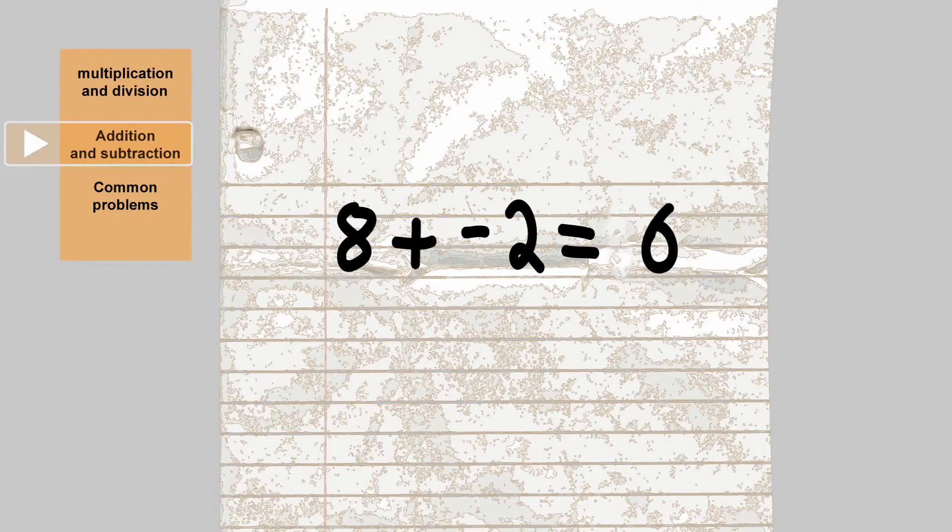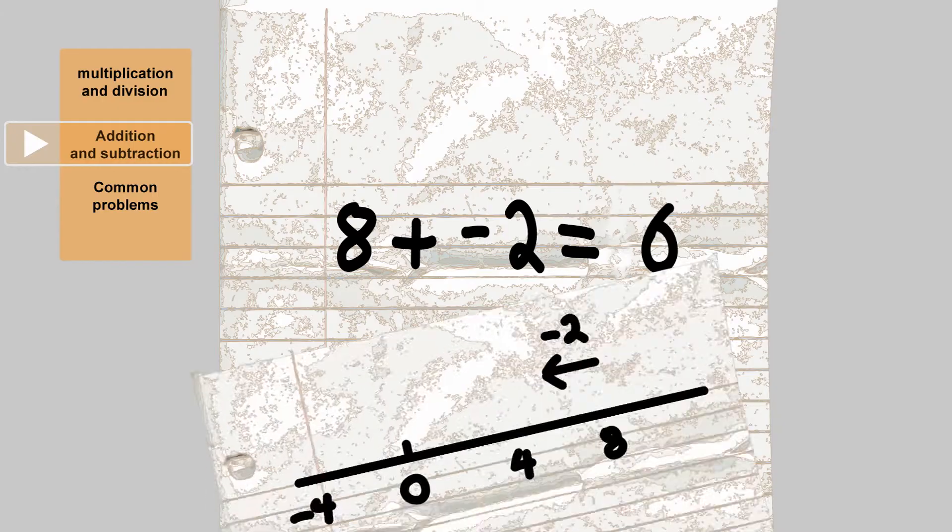Here's another example. 8 plus negative 2 equals 6. The sign is different, so you're going to subtract the smaller number from the larger, keeping the sign of the larger number. And again on a number line.